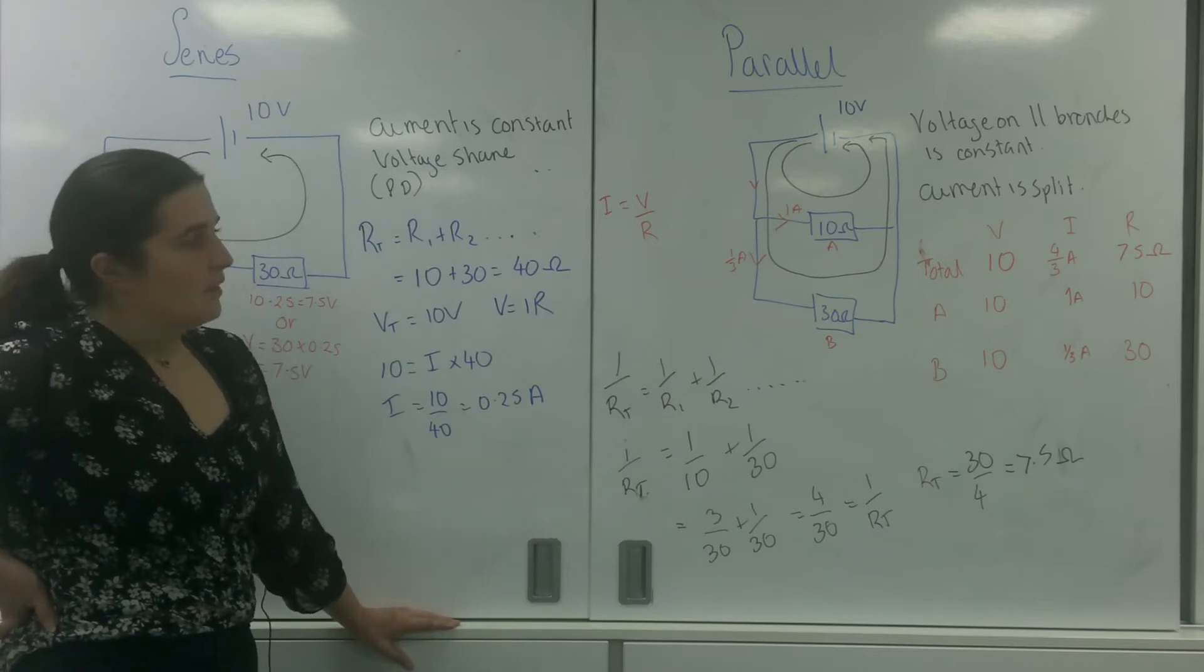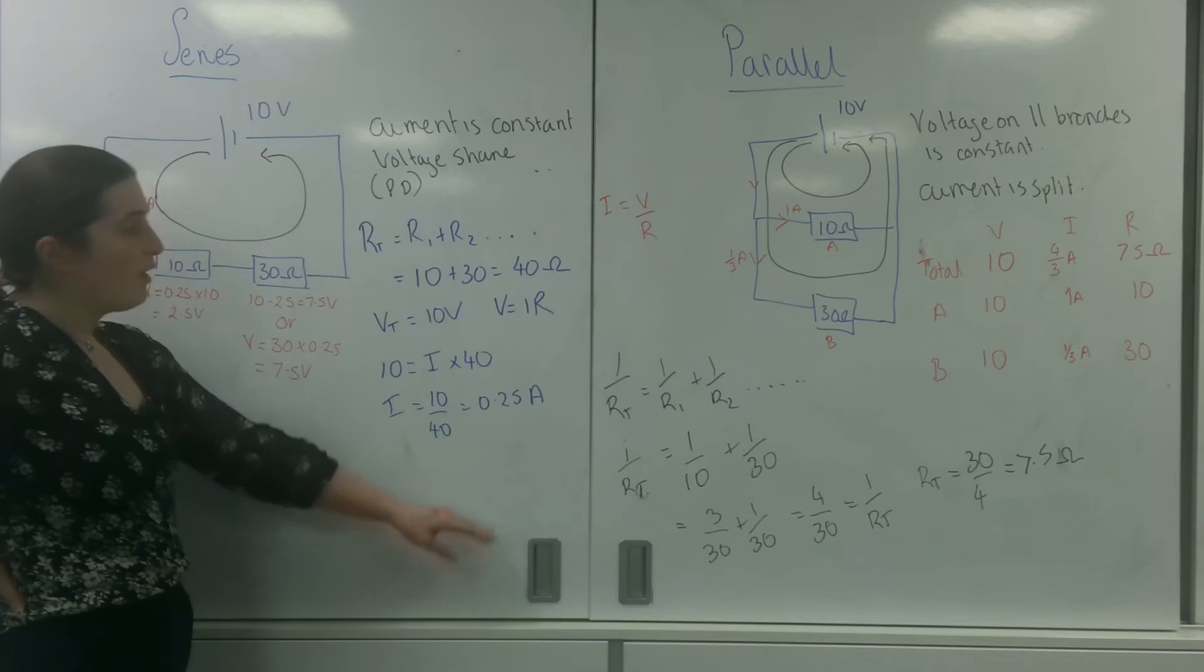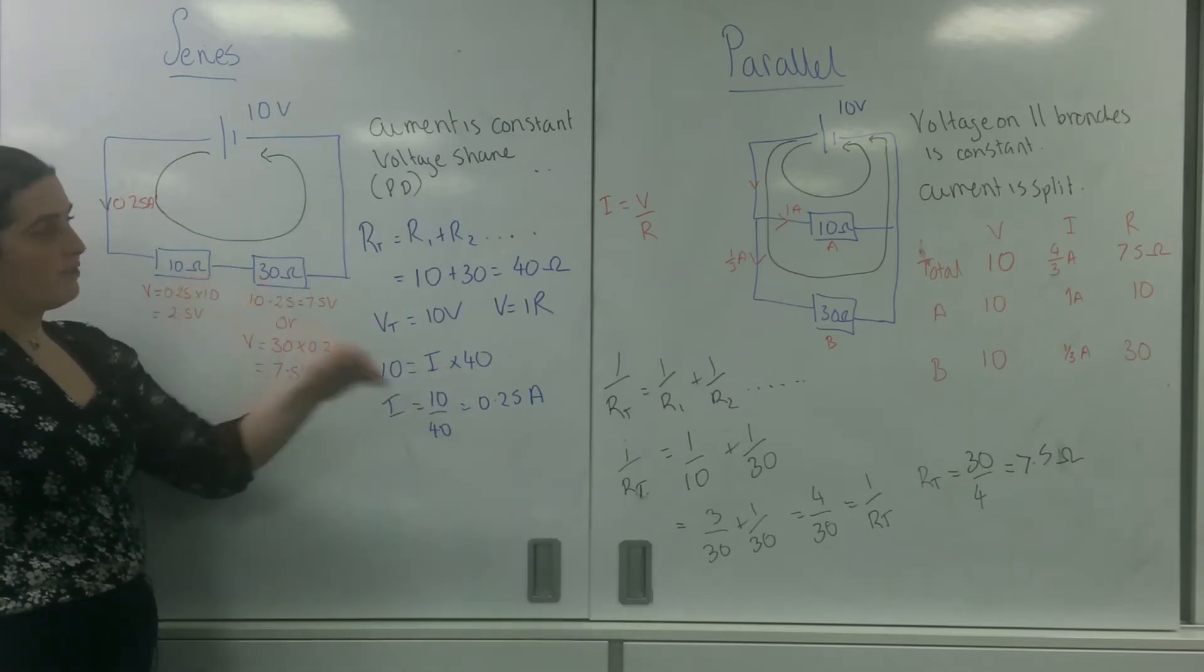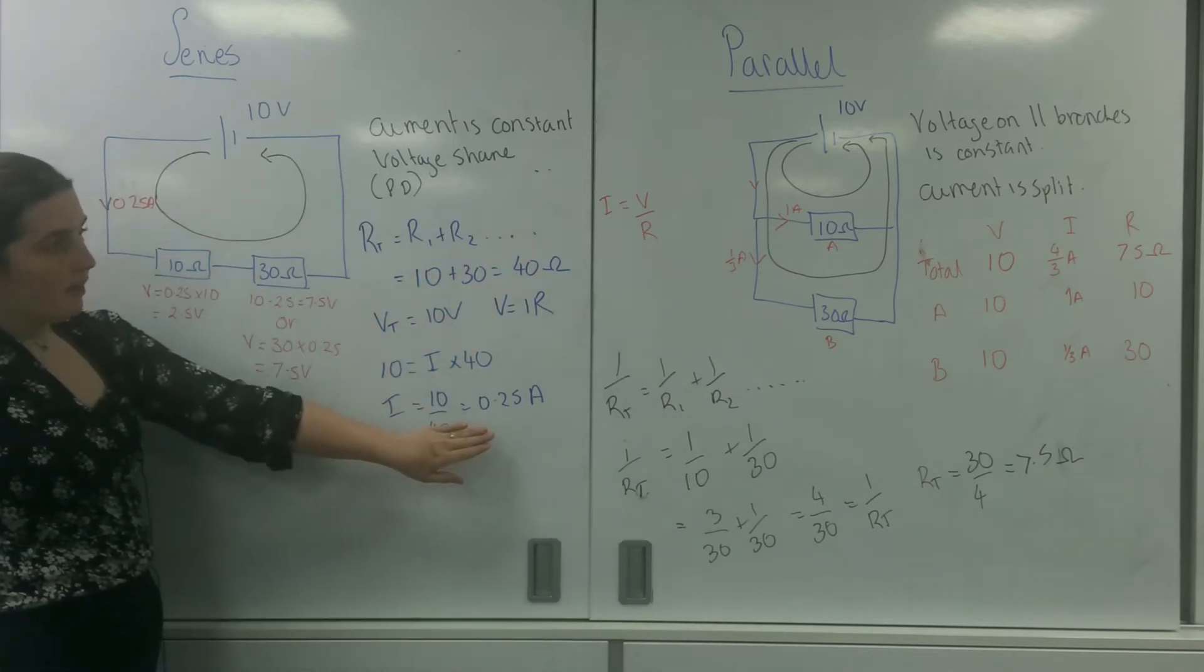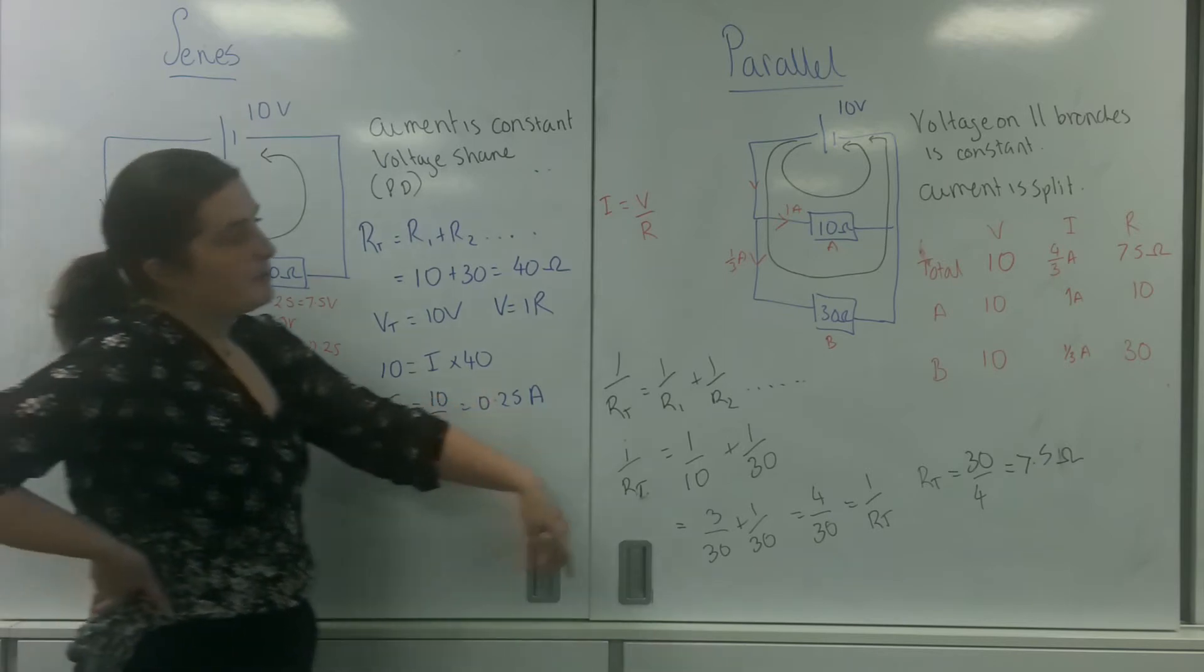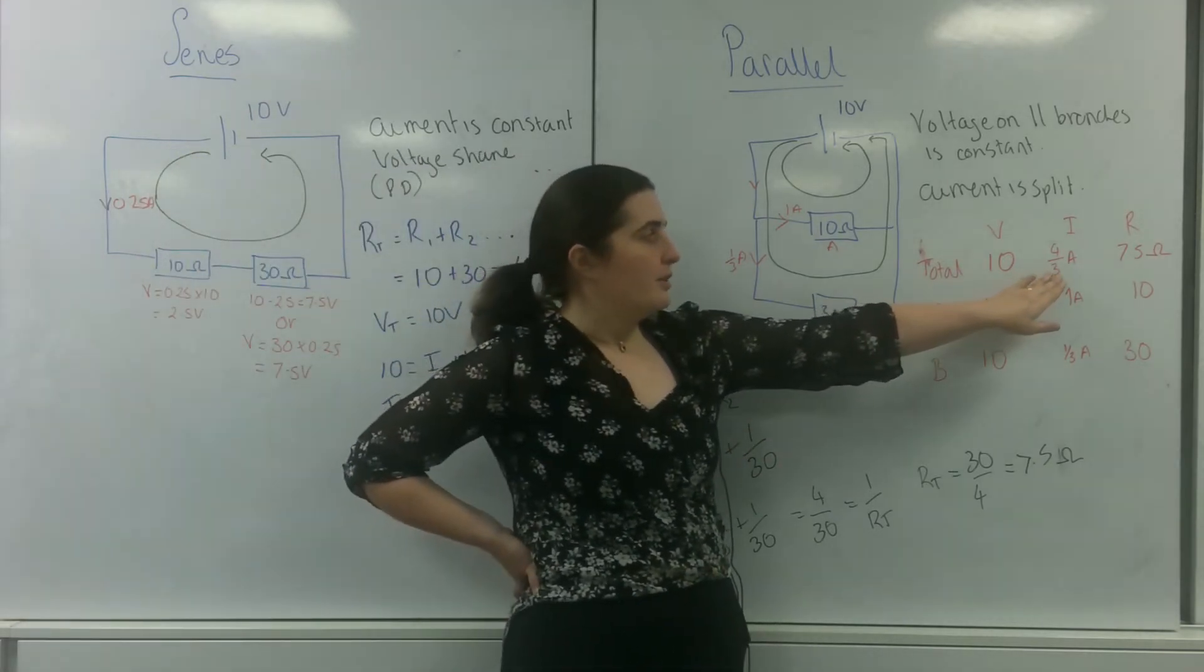However, one of the things you might notice is that the current, even though I've used a 10 and a 30, the current in this one is 0.25 amps and the current in this one is higher.